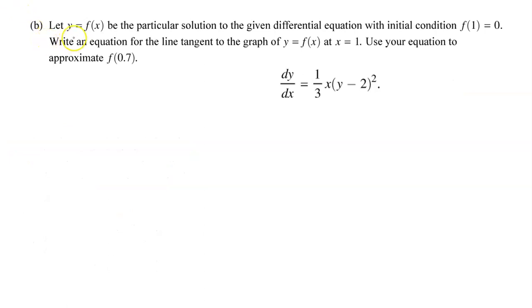Part B. Let y equals f(x) be the particular solution to the given differential equation with the initial condition f(1) equals 0. Write an equation for the line tangent to the graph of y equals f(x) at x equals 1. Use your equation to approximate f(0.7).